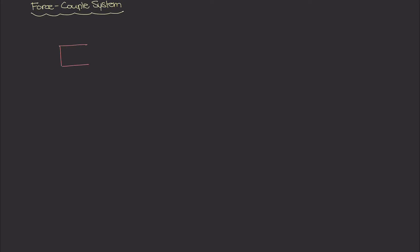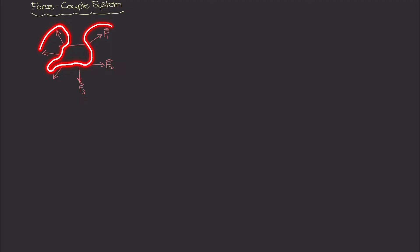The idea behind a force couple system is: say you have a body right here, some kind of rigid body, and on this body you have a bunch of forces — F1, F2, F3 going down — you just have all these forces acting on this body. The idea behind a force couple system is that we can replace all of these external forces at some point anywhere that we want with an equivalent resultant force and a moment force.